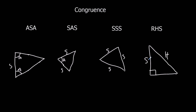So whenever we're asked to prove that two triangles are congruent, we have to get to one of these four reasons: angle-side-angle, side-angle-side, side-side-side, or right angle, hypotenuse and another side. Anything else isn't a rule for congruence — for example, angle-angle-angle isn't congruence because one triangle could be bigger than the other. We have to get to one of these four reasons.